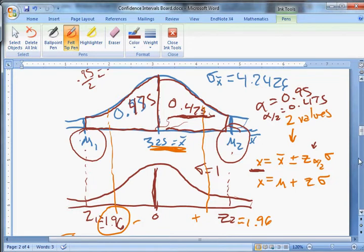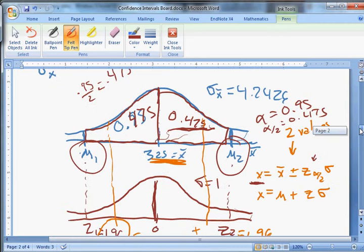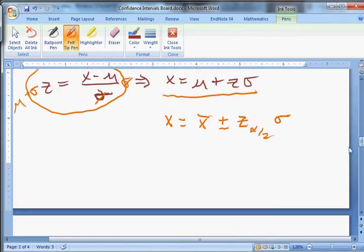Okay. So we have our x bar. We have our z alpha over 2, which is 1.96 and negative 1.96. And we have our sigma. What are they again? They're up here. Okay. So 325 and 60 were our x bar and our sigma. So let's do that. So now we have our x. It's going to be equal to 325 plus or minus 1.96 times s, which was 60. And that's going to give us our confidence interval.